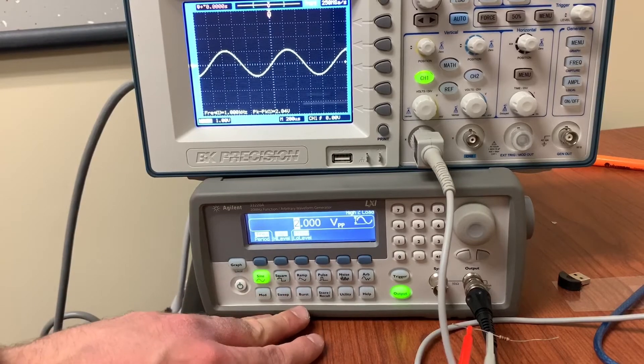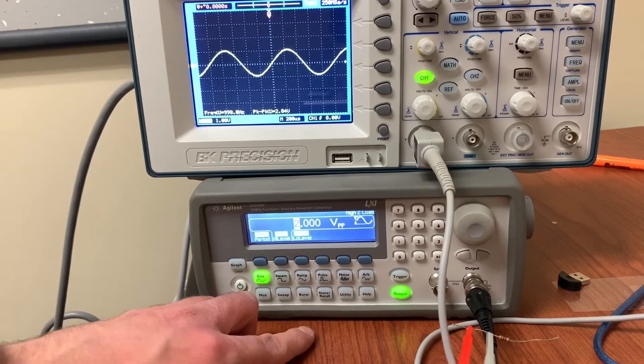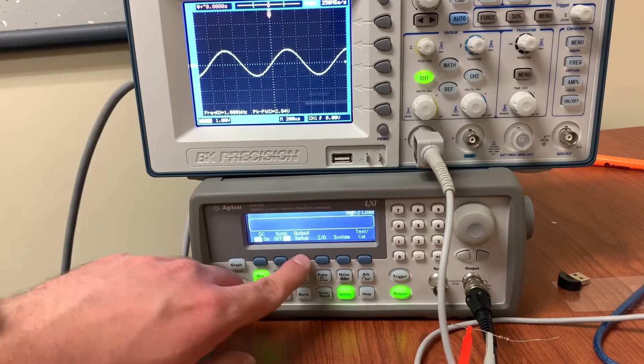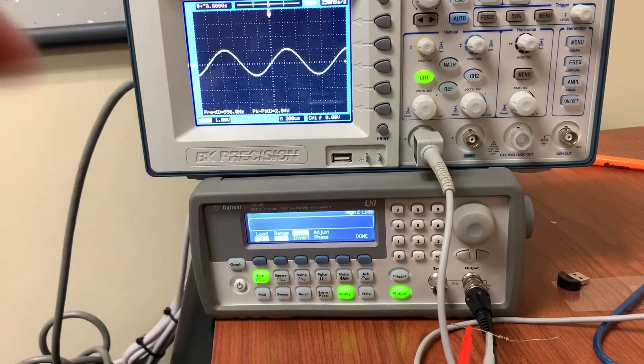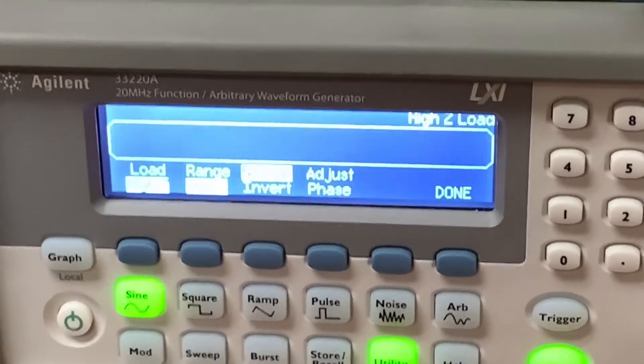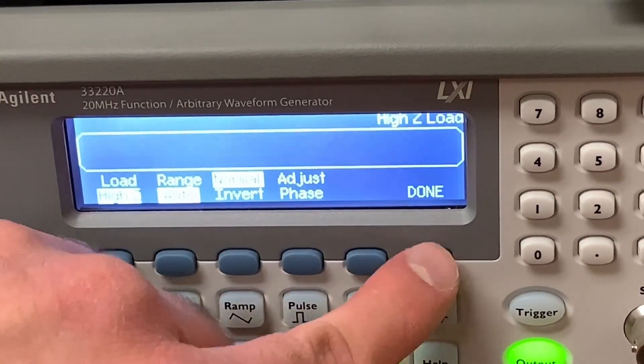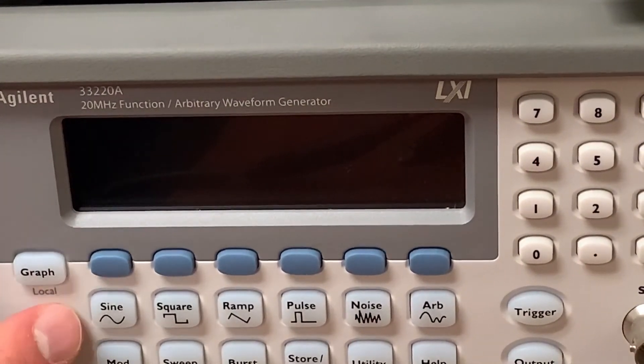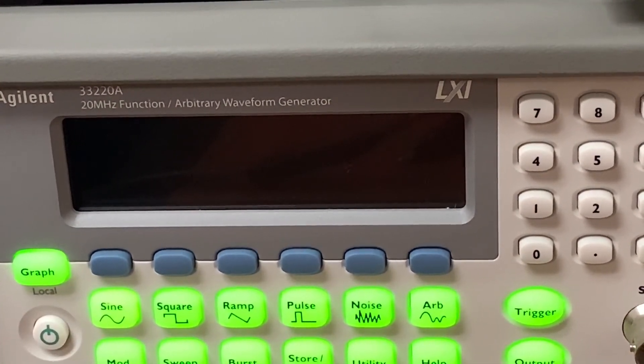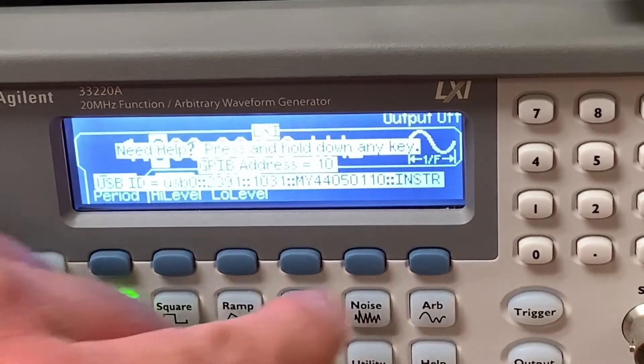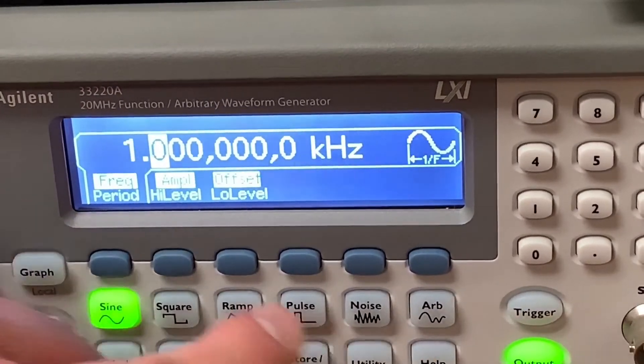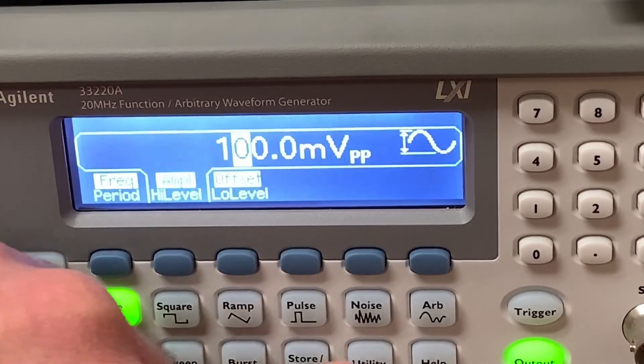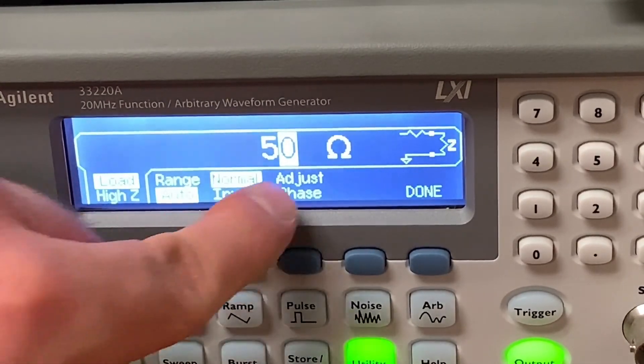So like before we've made a lot of changes to this thing and one way to undo it is to go back into utility, output setup, and then turn off high Z load and set it back to 50 ohms and press done. Or the alternative is to just turn it off and turn it back on. And these function generators will revert back to how they initially turned on. So in this case 1 kilohertz, amplitude 100 millivolts peak to peak, and our output is going to be 50 ohms.